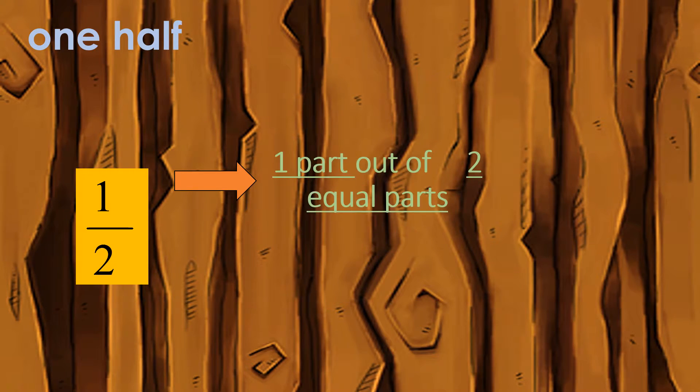We can also say one part out of two equal parts. The bottom number, or denominator, is the number of parts a whole is divided into.